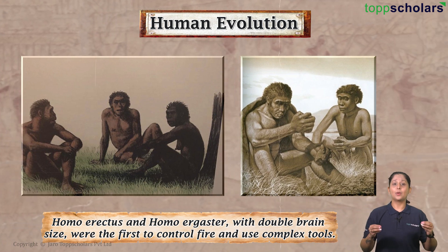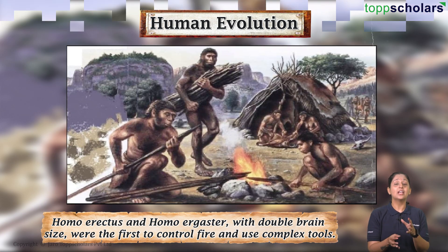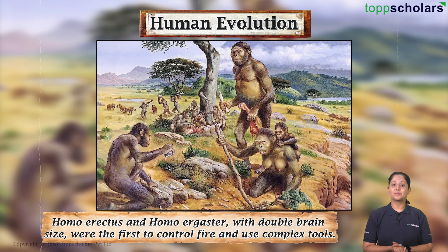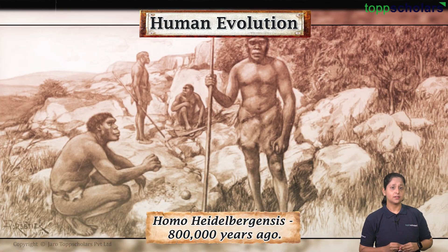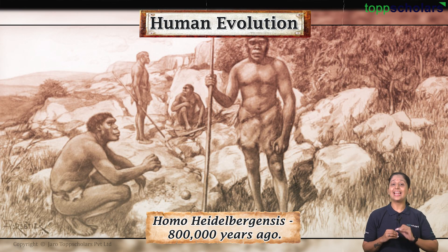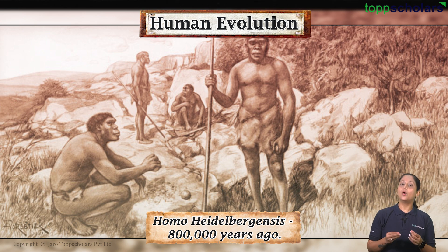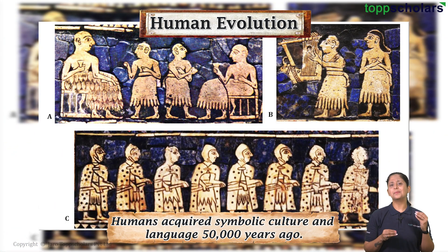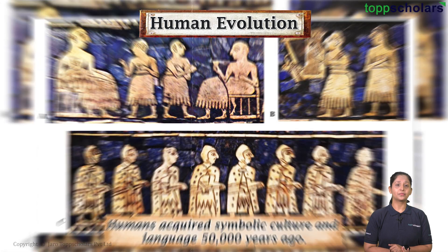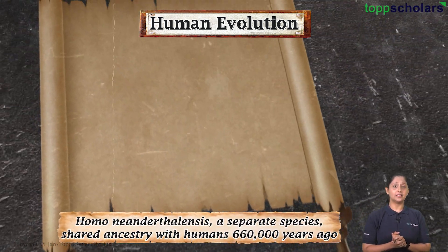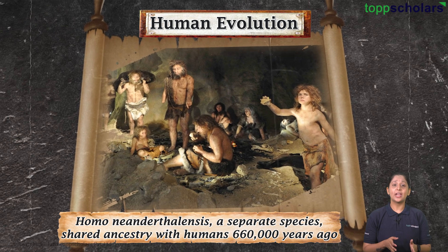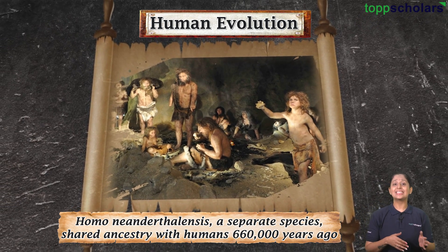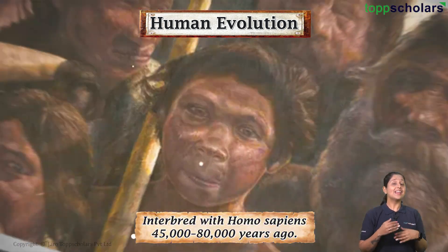Homo erectus and Homo ergaster had double the brain size, were the first to control fire, and used complex tools. Homo heidelbergensis appeared 800,000 years ago, while modern humans, Homo sapiens, emerged 200,000 years ago. Humans acquired symbolic culture and language 50,000 years ago.